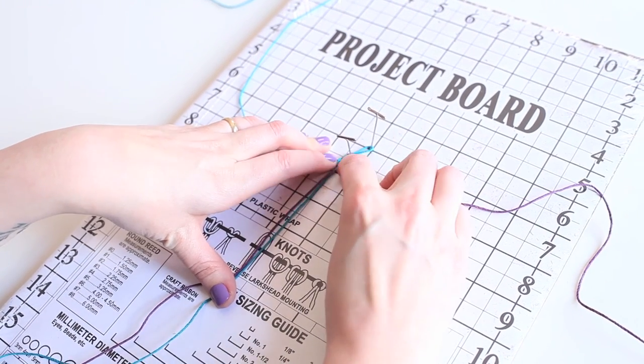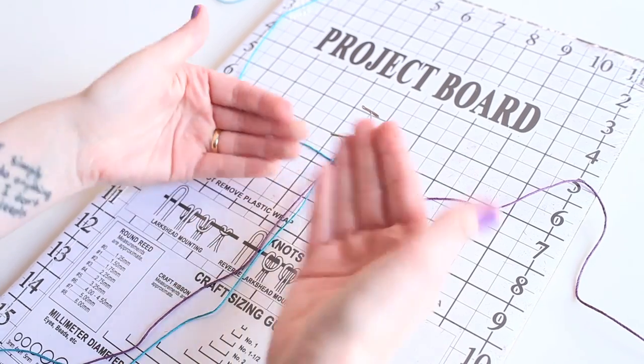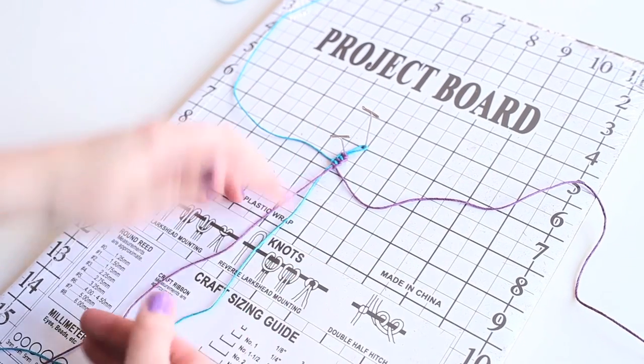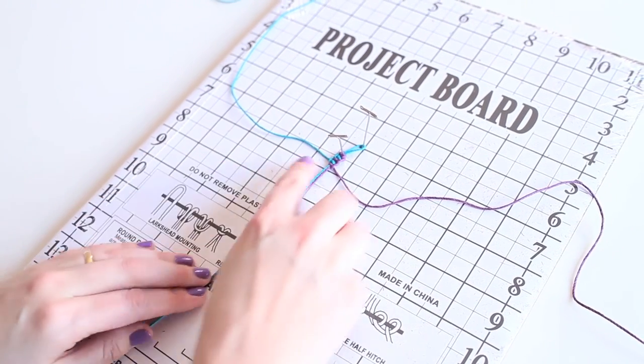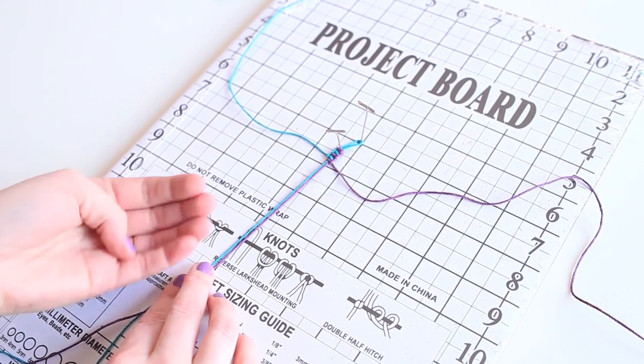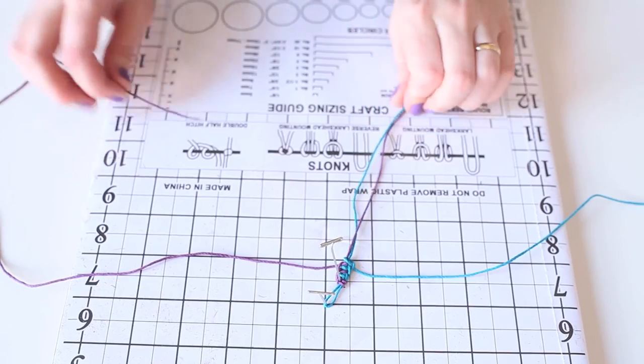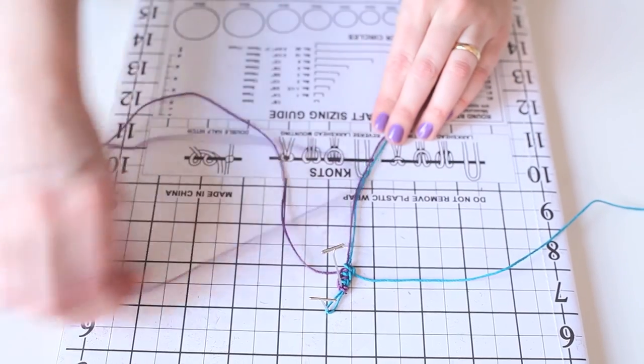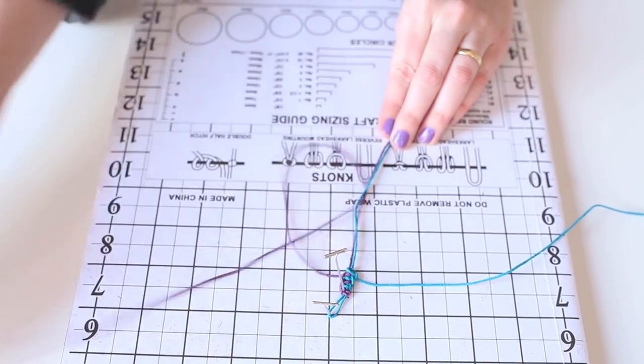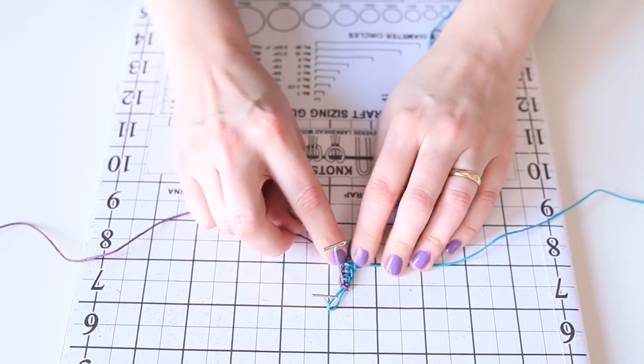And as we work, these two knots that face each other interlock in a ladder style that's really attractive as jewelry or zipper pulls. I'm gonna keep working down my bracelet forming these two color half hitch knots until the bracelet is long enough to fit around my wrist.